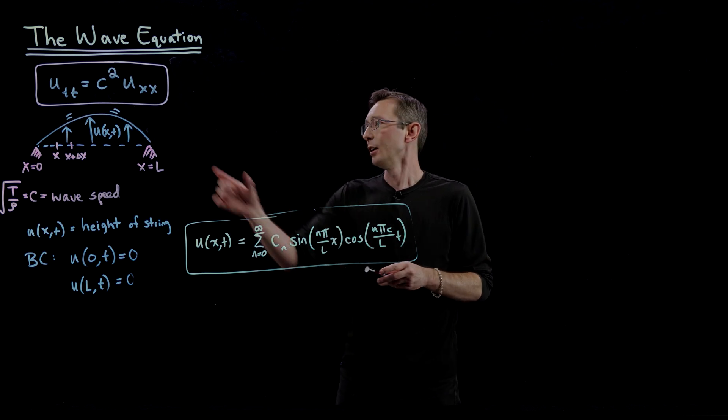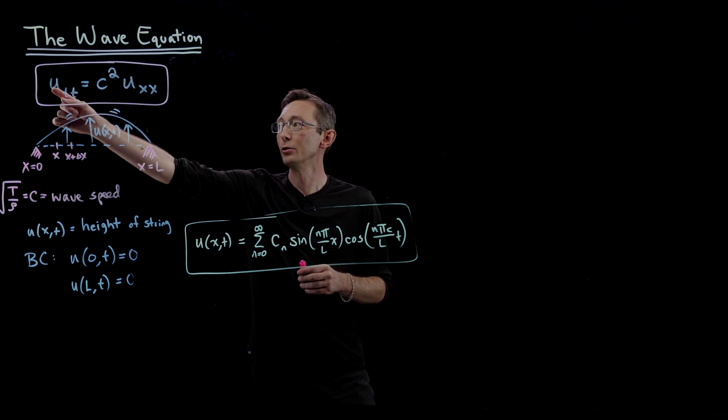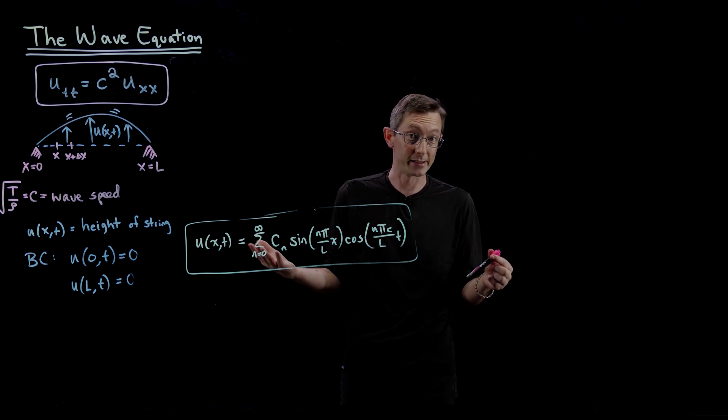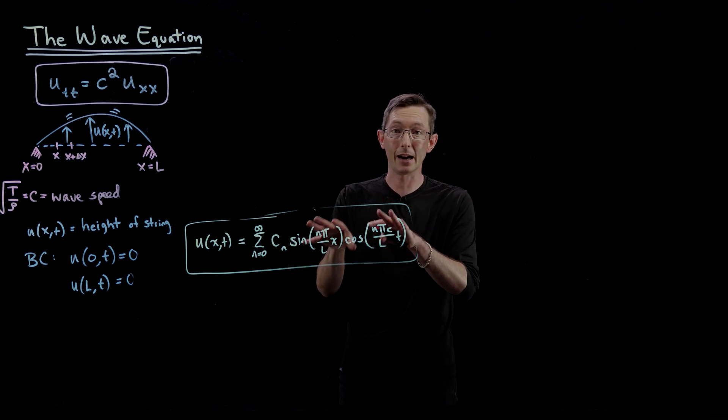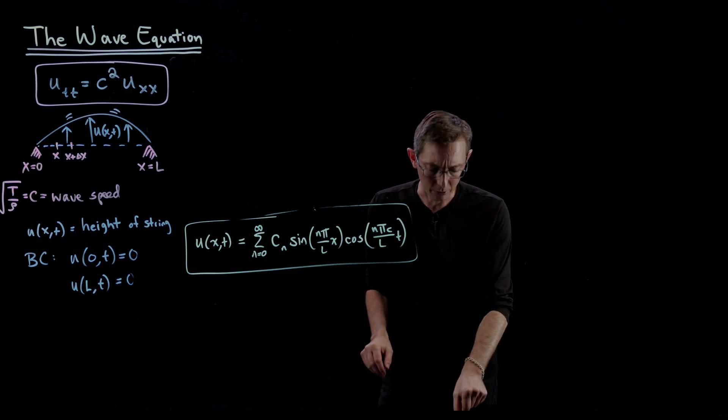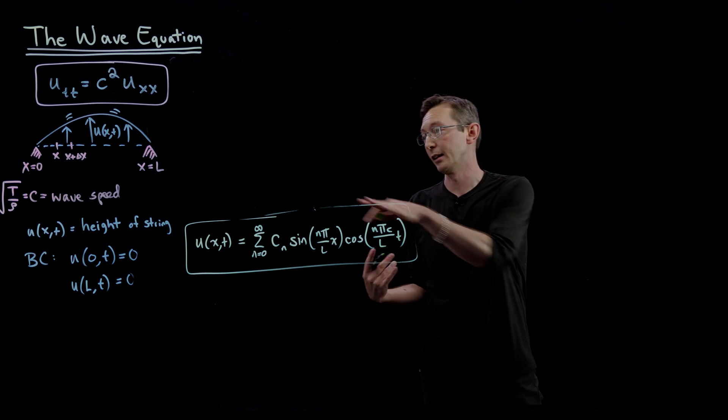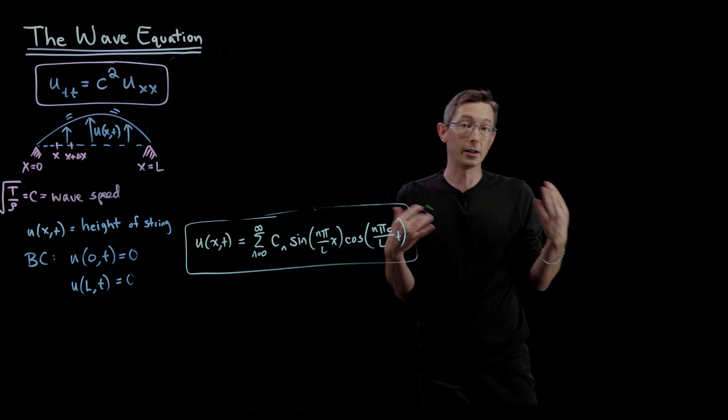...are that we basically decompose u into a function of space times a function of time. That's called separation of variables and you get this kind of form. So I thought what would be fun today would be to talk about the implications of the wave equation and solution for something fun like slacklining.